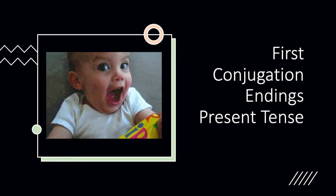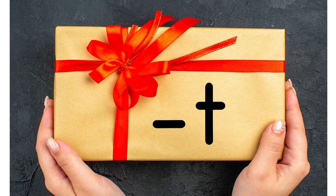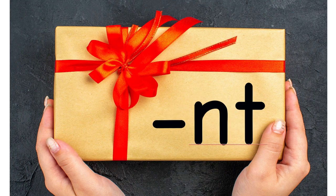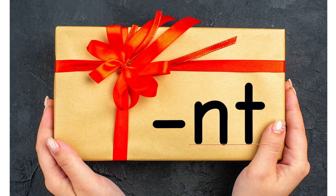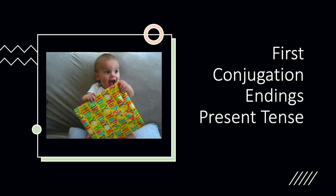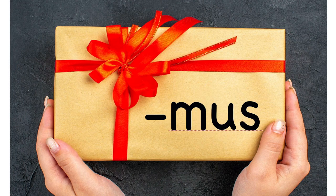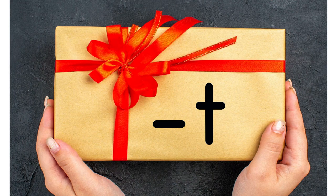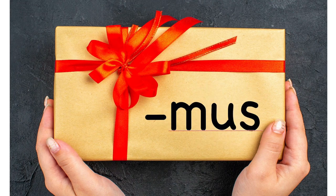First conjugation, present tense. First conjugation, present tense: o, s, t, mus, tis, ont. O, s, t, mus, tis, ont. O, s, t, mus, tis, ont.